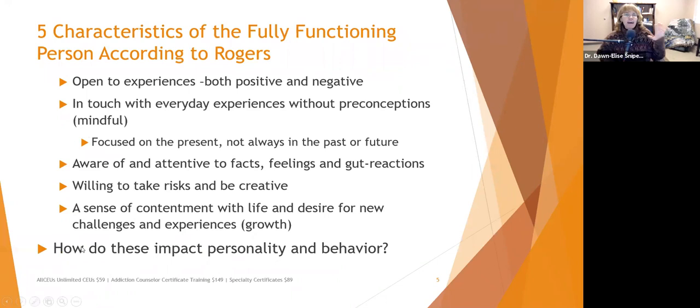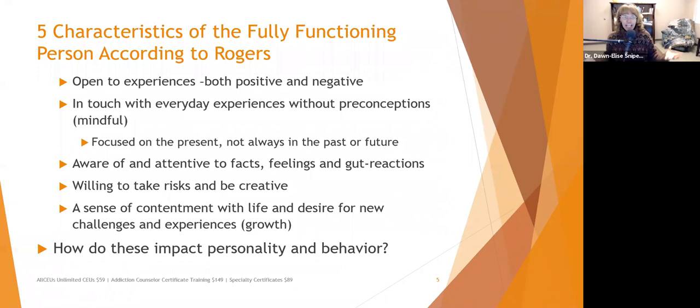According to Rogers, the fully functioning person has five characteristics. First, they are open to experiences — both positive and negative. DBT and acceptance and commitment therapy reinforce this: life will have pain, and we need to be open to experiencing pain as well as joy, recognizing it as transient. Being open to those experiences is what gives life color.